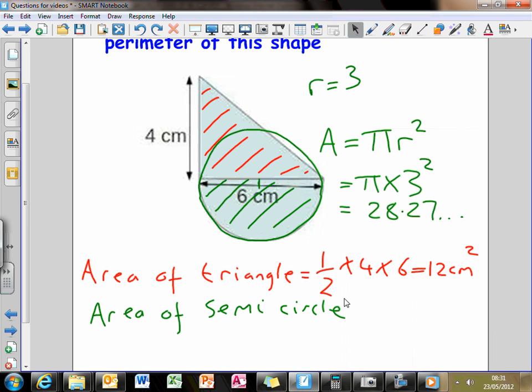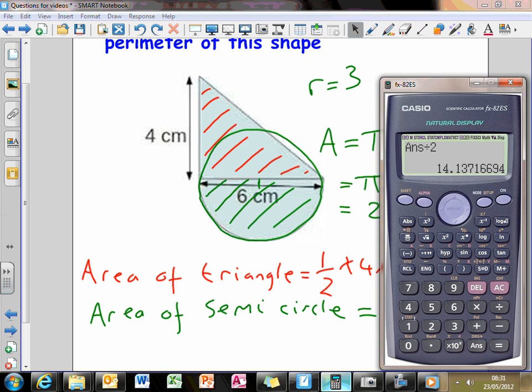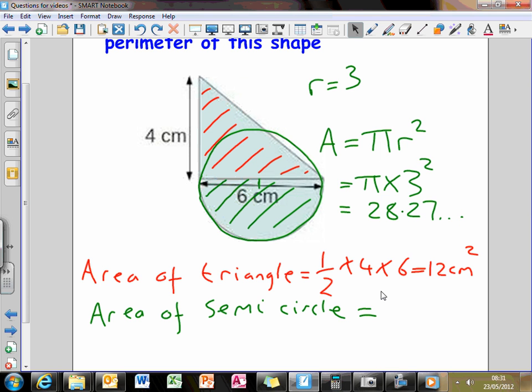So, the area of the semicircle, coming down here, oh, I've forgotten it already. I have to put my calculator back up, is equal to, it was 14.137. Okay?